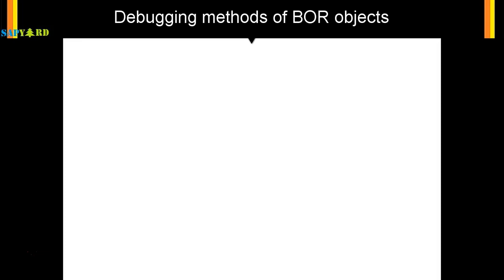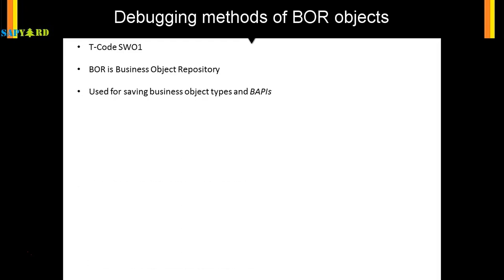In order to see the BOR object, you have to go to T-code SWO1. There you will see the BOR objects. These BOR objects are used in workflows and also used in RFCs. Give the BOR object name and hit Display.